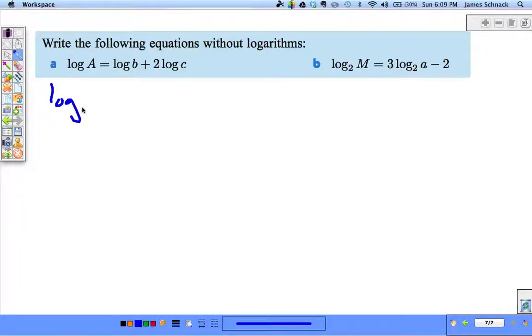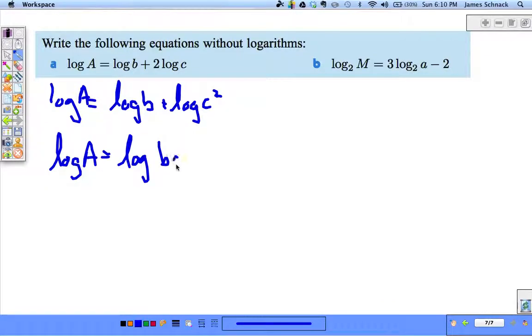So log a equals log b plus log c squared. Log a equals log b c squared. And now we have log equals log a equals b c squared. This is really the opposite process we just did.